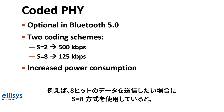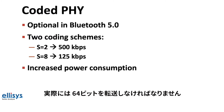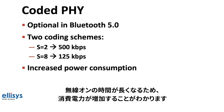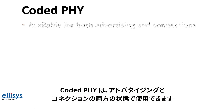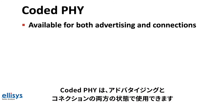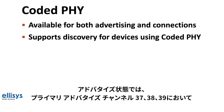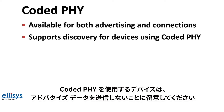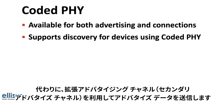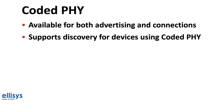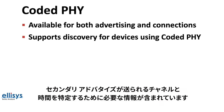For example, if you want to transmit 8 bits using the S=8 scheme, you will actually have to transfer 64 bits for that 8 bits of data, which increases the radio on time and power consumption. Coded PHY is also available in both advertising and connection states. In the advertising state, the device using Coded PHY does not send data on the primary advertising channels 37, 38, and 39, but instead uses extended advertisements on the secondary channels. The primary advertisements contain the information needed to locate the channels and times at which the secondary advertisements are sent.